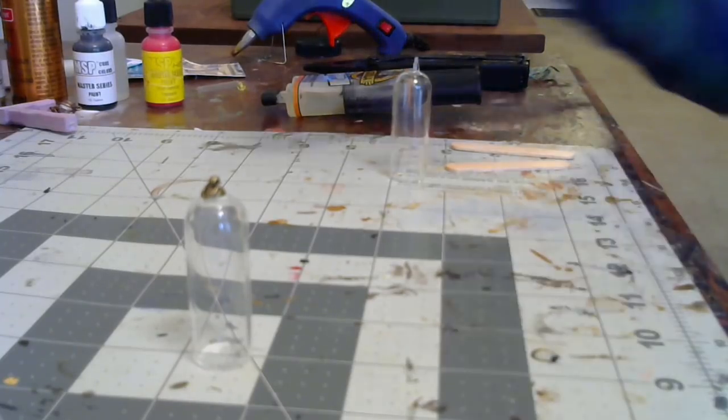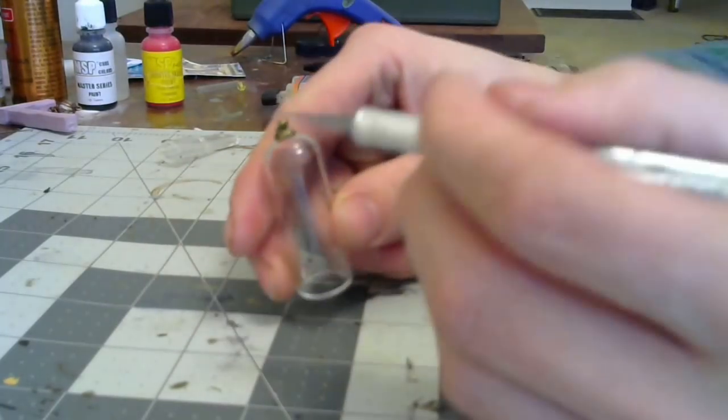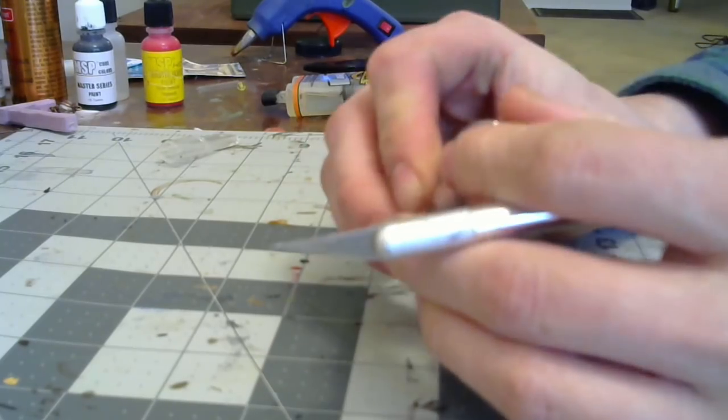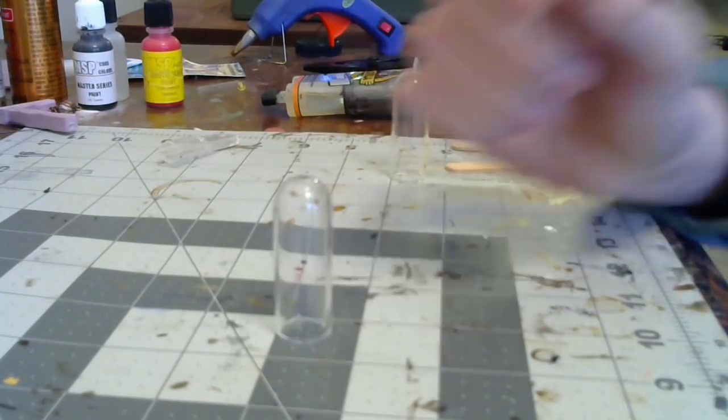To prep the bottle, take an X-Acto knife and chip away the glue that connects the top piece. Just be mindful, if it's giving you trouble, take care not to break the glass. Eventually it will come off.